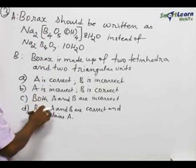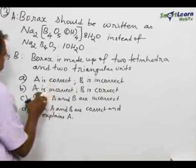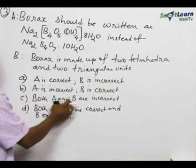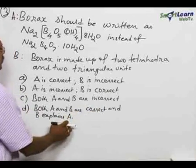Now, let us see all the options. A is correct, B is incorrect. B, A is incorrect, B is correct. C, both A and B are incorrect. D, both A and B are correct and B explains A.